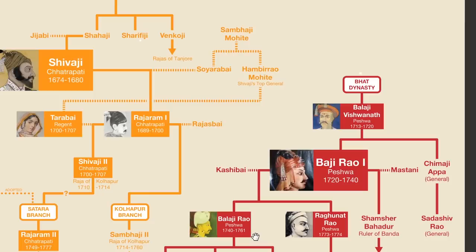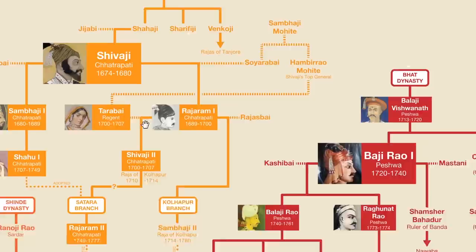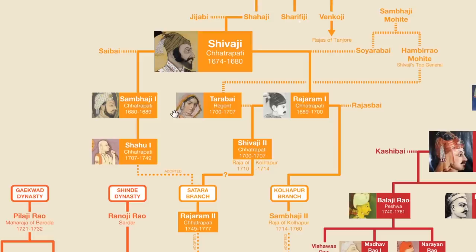The Peshwas were kind of like prime ministers, and starting with a Peshwa named Balaji Vishwanath, the position became hereditary, staying within the Bhat family. We'll come back to the Peshwa family tree, but for now let's continue with the Chhatrapatis.